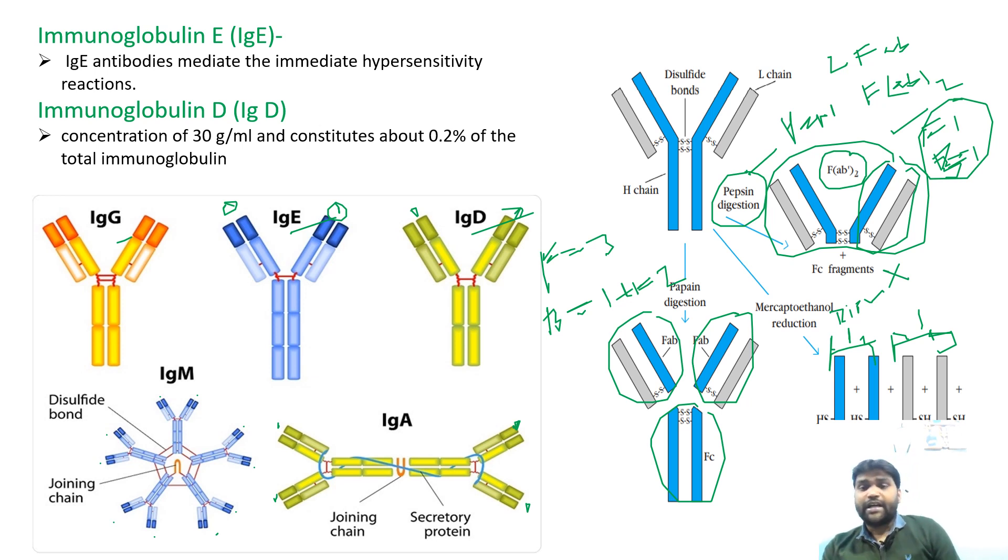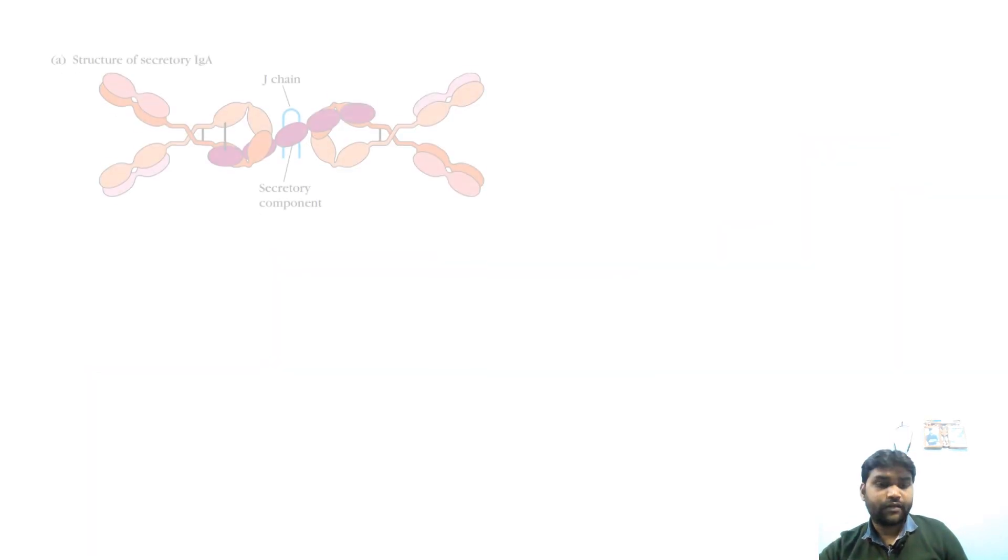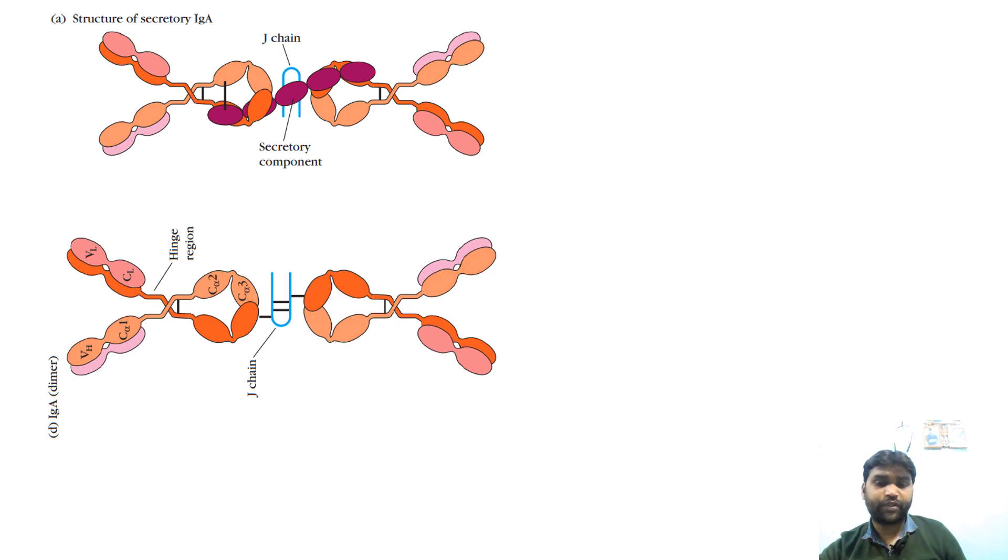Third, if you break with mercaptoethanol and break disulfide bonds, all the light and heavy chains will separate. So the fragment number shown here is one, two, three, four. So fragment number will be four. But if you talk about bands after electrophoresis, these two molecules are same, so their band will be one, and these two are also same, so their band will be one. So total bands will be two.